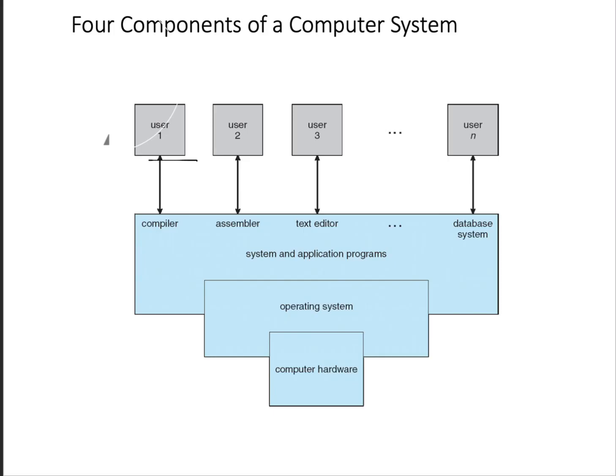This diagram helps us understand what the operating system actually is. It represents the four components of a computer system. We have the computer user, and we have the hardware.